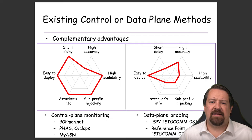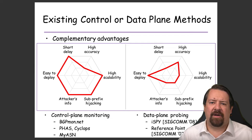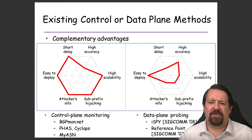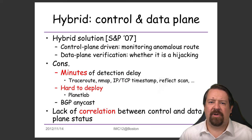Existing techniques include control plane monitoring, which does well because it has a comprehensive view of the network. However, it has trouble with accuracy. On the other hand, data plane probing monitors connectivity to the prefixes, but it suffers on the scalability side and can't necessarily differentiate between a sub-prefix and the original legitimate prefix. We could combine the control plane and data plane methods together, but this becomes a more complex and challenging system.